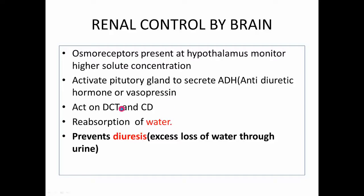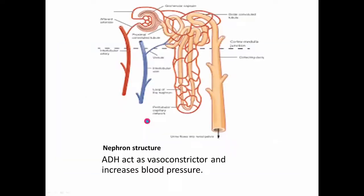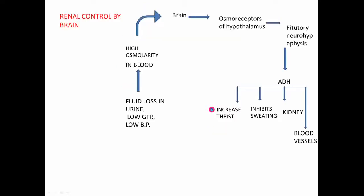The osmoreceptors stimulate the pituitary gland to secrete a hormone known as ADH, or antidiuretic hormone, also called vasopressin. This hormone acts on the distal convoluted tubule and the collecting duct of the nephron. ADH is released from the pituitary gland and stimulates four functions.